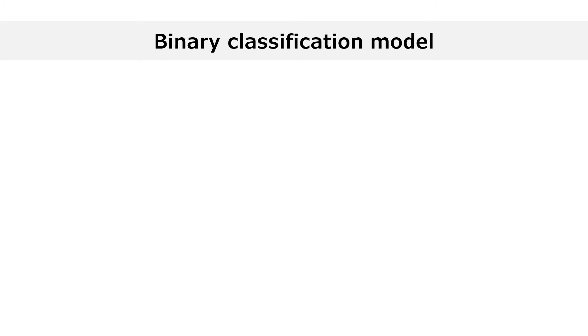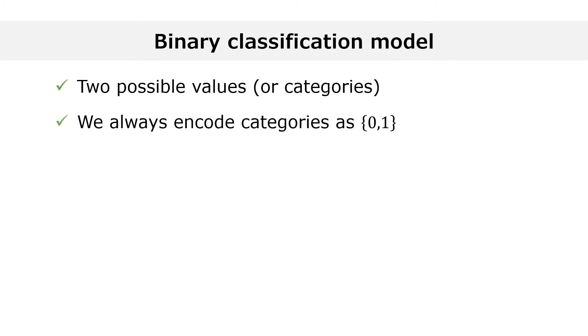The logit model is a binary classification model, that is, a model in which y can take only two possible values. In other words, y can belong to two possible categories. We always label these categories as zero and one.